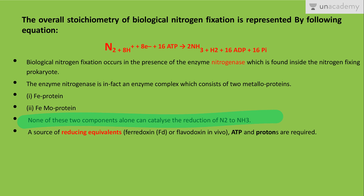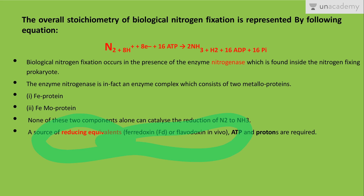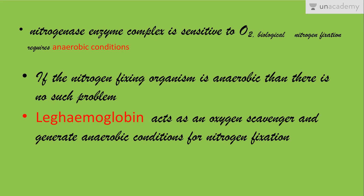The second requirement is a reducing equivalent, or a source of reducing agent, which may be ferredoxin or a flavoprotein — something that can provide electrons for the reduction of nitrogen to ammonia. The third requirement is the presence of ATP, and the fourth is that protons are required. So the four requirements are: nitrogenase enzyme, a reducing equivalent (ferredoxin or flavodoxin), ATP, and protons.